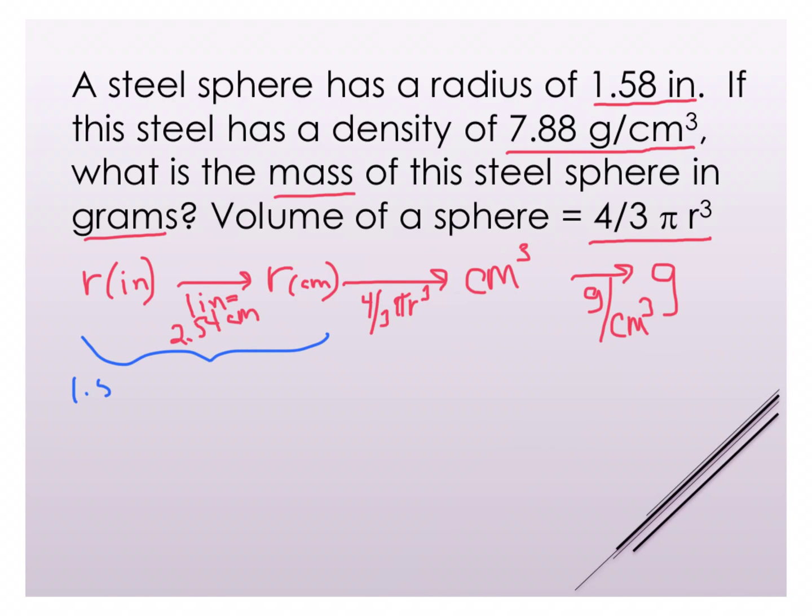I'm given 1.58 inches and I know that 1 inch equals 2.54 centimeters. If I look at this I can see that inches cancels with inches, so I'll be left with centimeters. We have 1.58 times 2.54 and I end up with 4.013 centimeters.